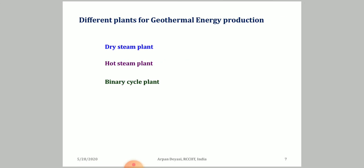Geothermal power plants are made in three different types: dry steam plant, flash steam plant (also called hot steam plant), and binary cycle plant. Both 'hot steam' and 'flash steam' refer to the same type. I will now discuss the features of each with diagrams, and then move to the components common to all plant types and their functionalities.